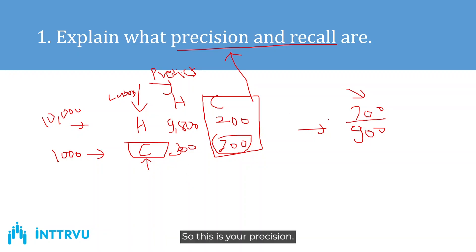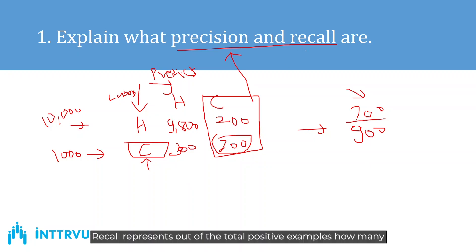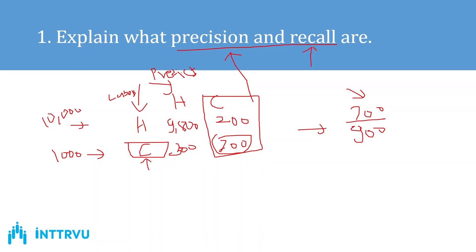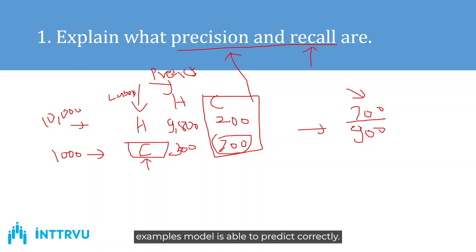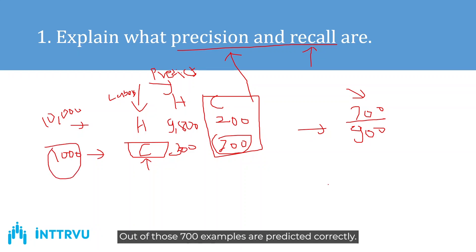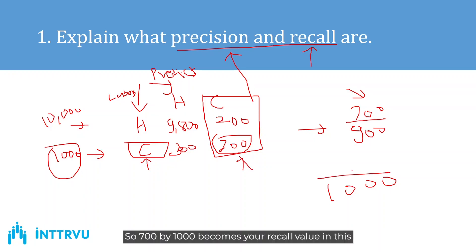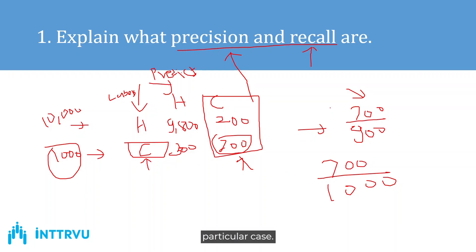Recall represents: out of the total positive examples, how many did the model predict correctly. The total positive examples are 1,000, and out of those, 700 are predicted correctly. So 700 divided by 1,000 becomes your recall value in this particular case.